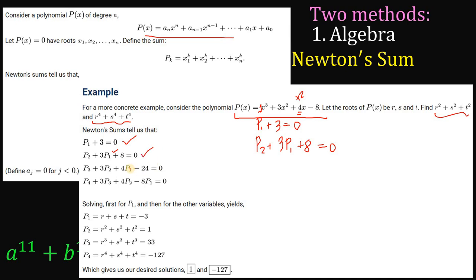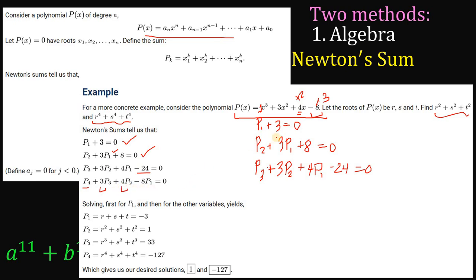The third equation says p sub 3 — equivalent to r cubed plus s cubed plus t cubed — plus 3 times p sub 2 plus 4 times p sub 1 minus 24 equals 0. The minus 24 comes from negative 8 multiplied by 3. So we can say p sub 4 plus 3 times p sub 3 plus 4 times p sub 2 minus 8 times p sub 1 equals 0, and using Newton's Sum you can continue to get p sub 5 and beyond.